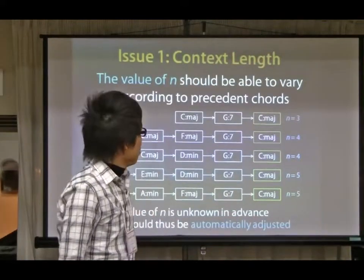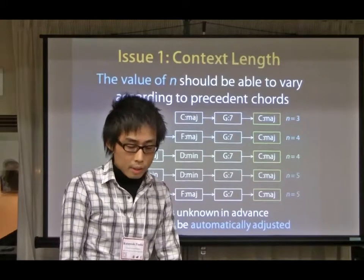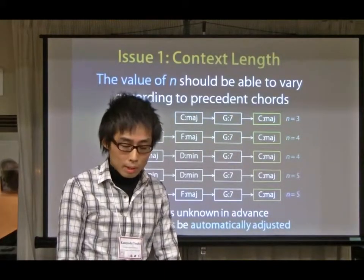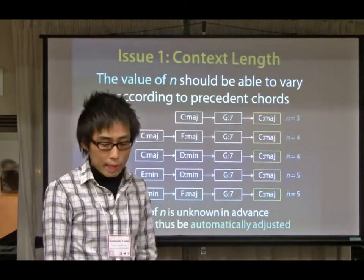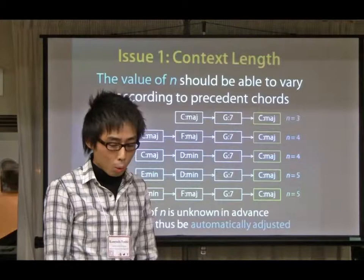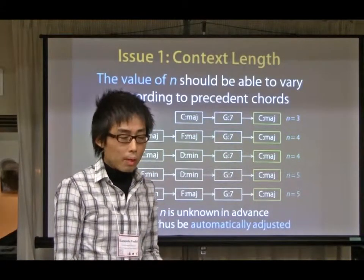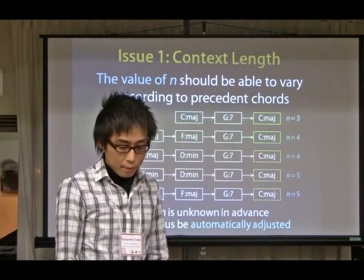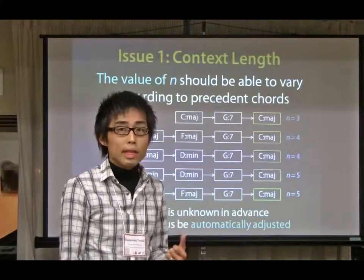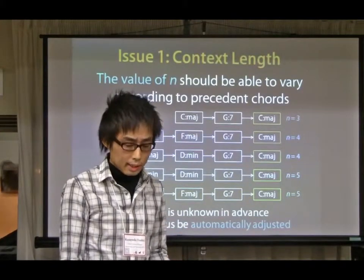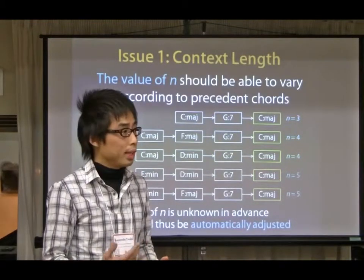There are two critical issues about training N-gram models. The first issue is about context length — in other words, the value of N should be able to vary according to preceding chords, because there are various chord patterns that have different lengths. However, the problem is that the value of N is unknown in advance, so it is necessary to automatically adjust the value of N from the training data.